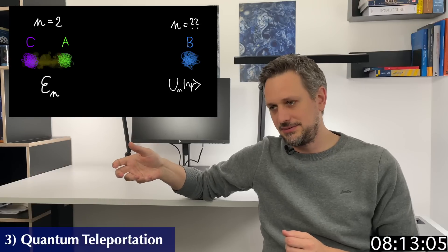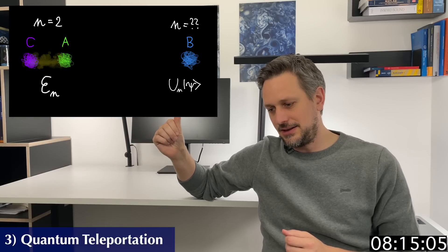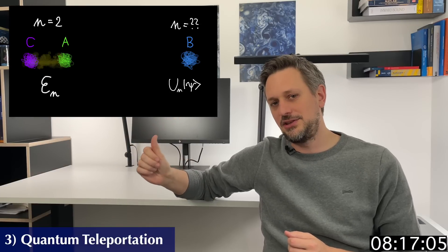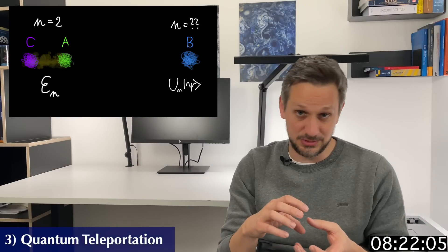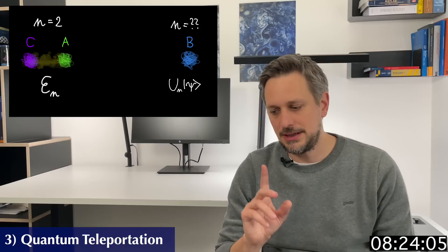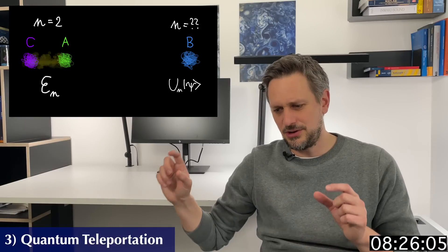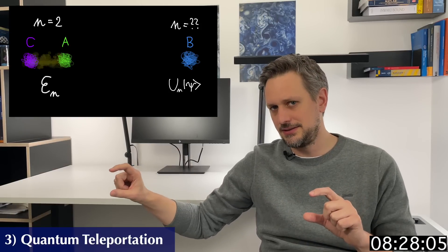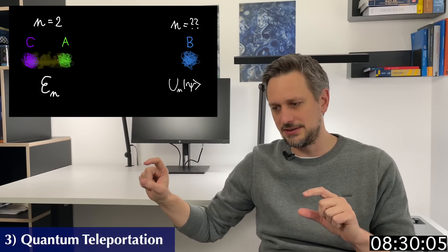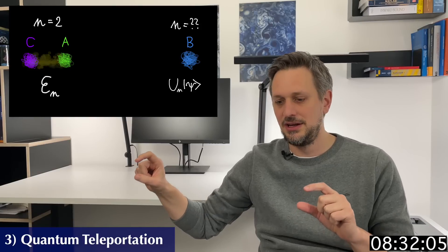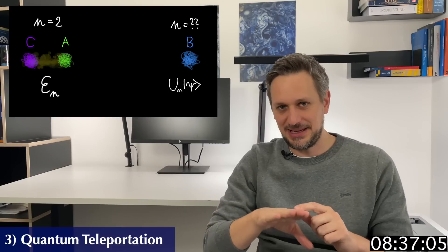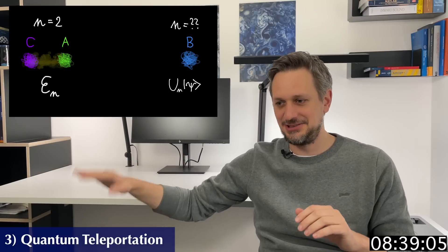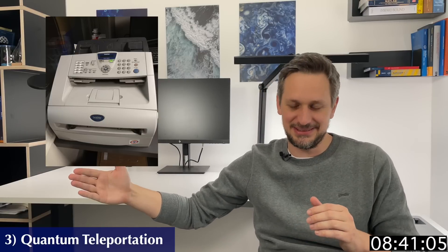What we get at the receiver is a completely random modification of the state that we actually want to teleport. We cannot choose what we will get as a measurement outcome. Also remember that you already need the particles to be in place. So the carriers of the state, the carriers of the information, already have to be there. In a sense like the sheet of paper at the sender and the receiver from a faxing machine.